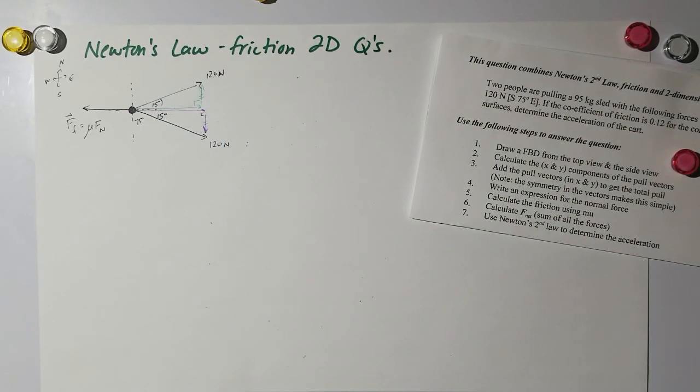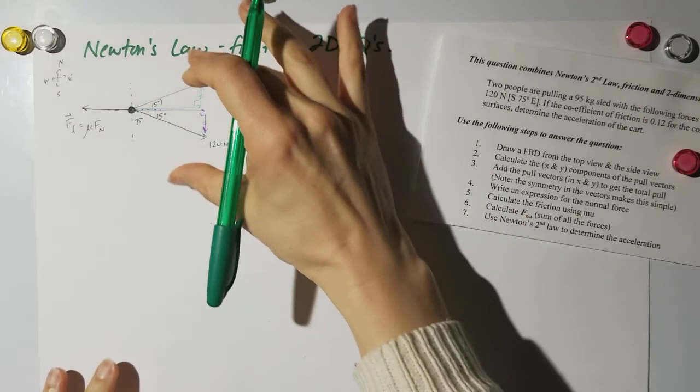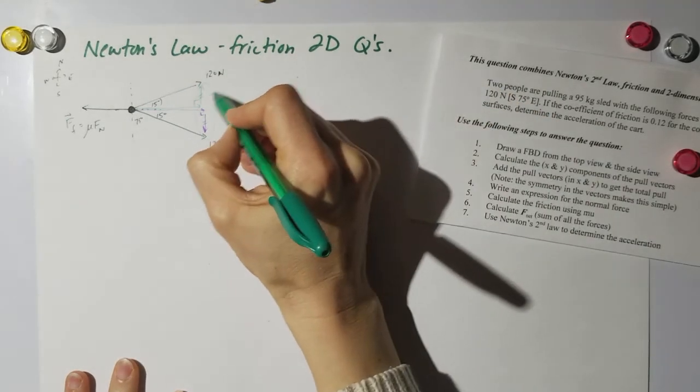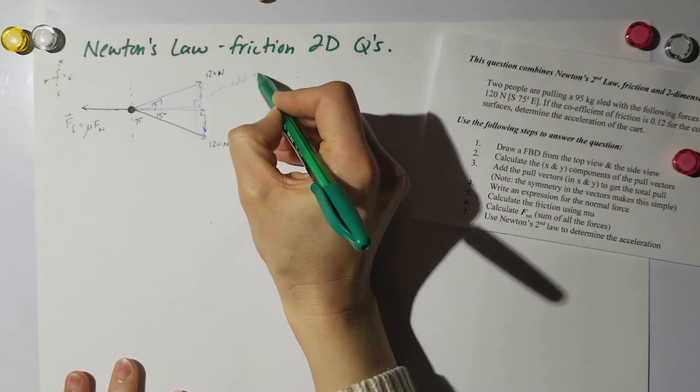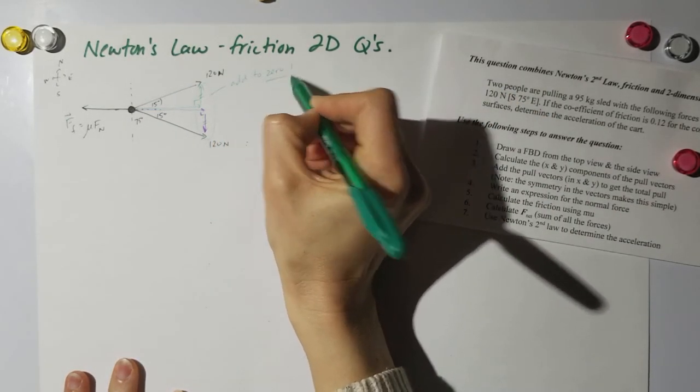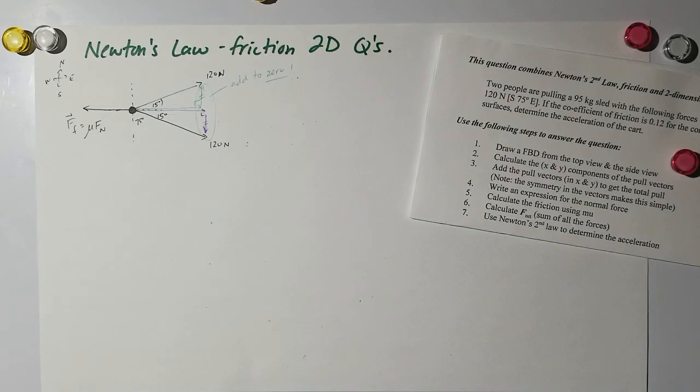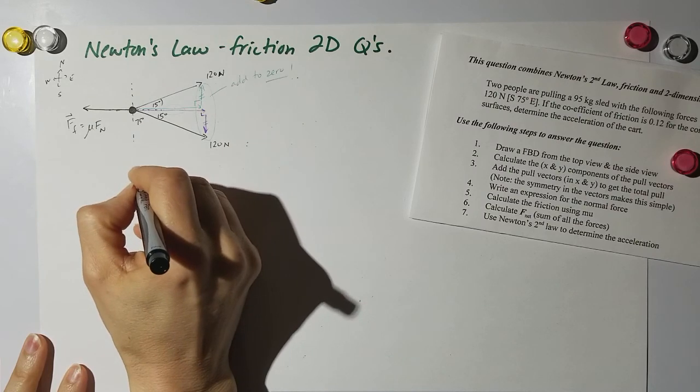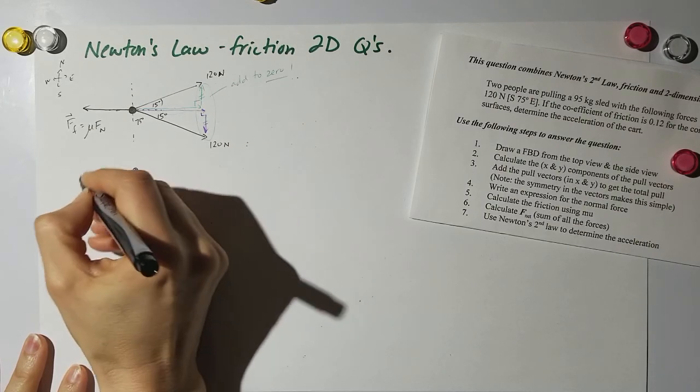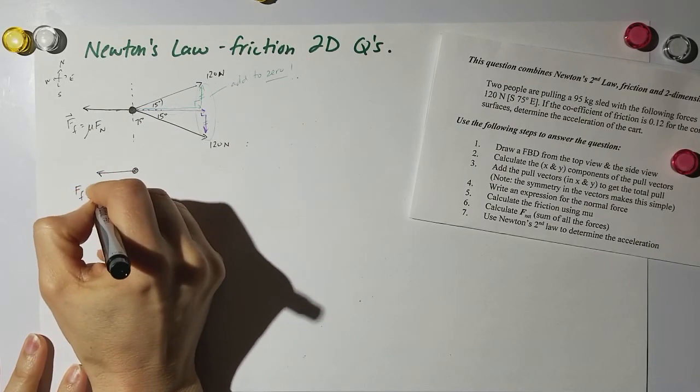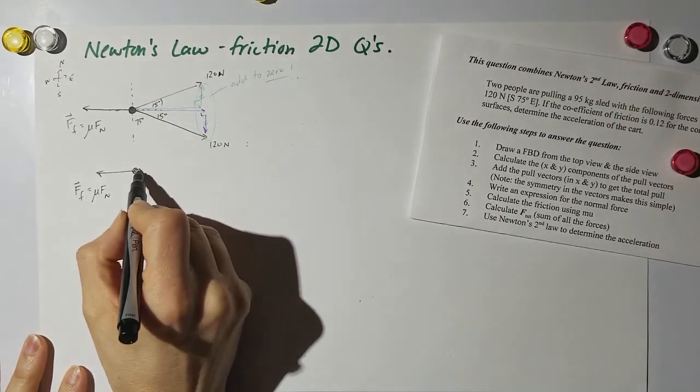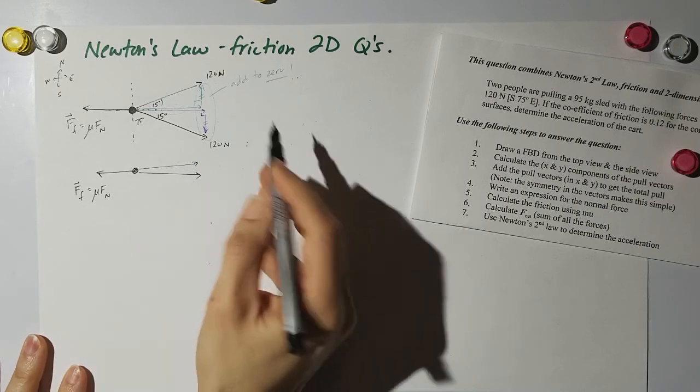What would those vertical components add up to be? If I took these two and added them, they're going to add to zero. So really what am I left with for the top view? I'm left with force of friction equals mu F_n, and then I'm left with two of these but they're not 120.